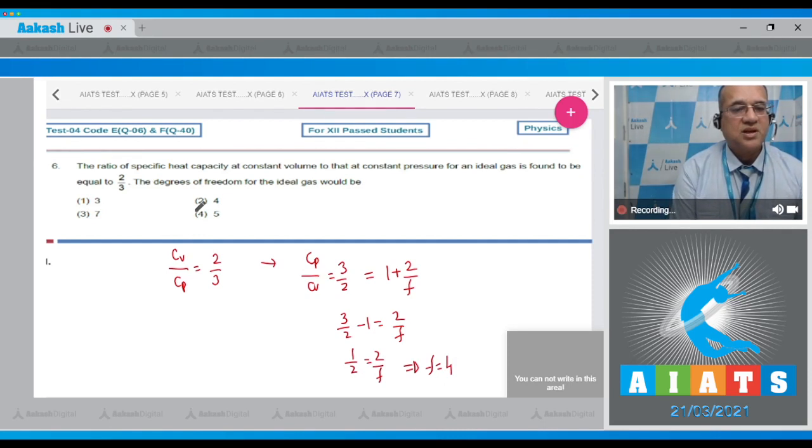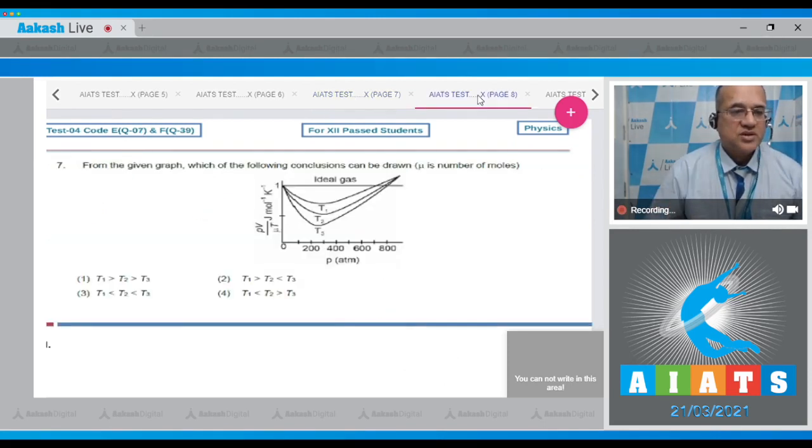So the answer to this question is option 2. Now question number 7: From the given graph, which of the following conclusions can be drawn? On the y-axis is PV upon μT and on the x-axis is the pressure.